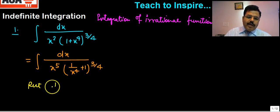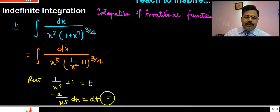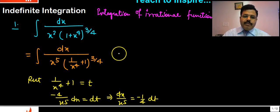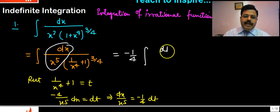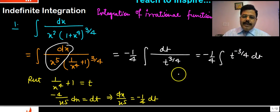Now put the substitution: 1/x⁴ + 1 = t. The derivative gives x⁵ dx = dt, so dx/x⁵ = −(1/4)dt. Therefore, we can write the integral as −(1/4)∫dt/t^(3/4), which is −(1/4)∫t^(−3/4) dt.